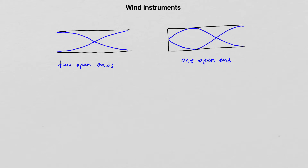For example, this would be the picture of a standing wave of a certain harmonic excited inside a wind instrument with two open ends. And this is the visualization of a certain harmonic standing wave excited in a wind instrument with one closed end.